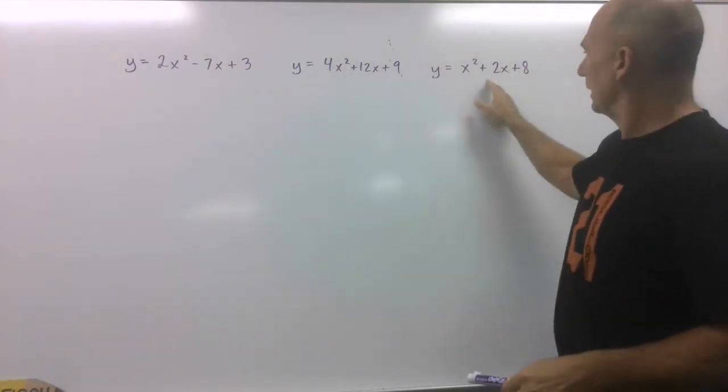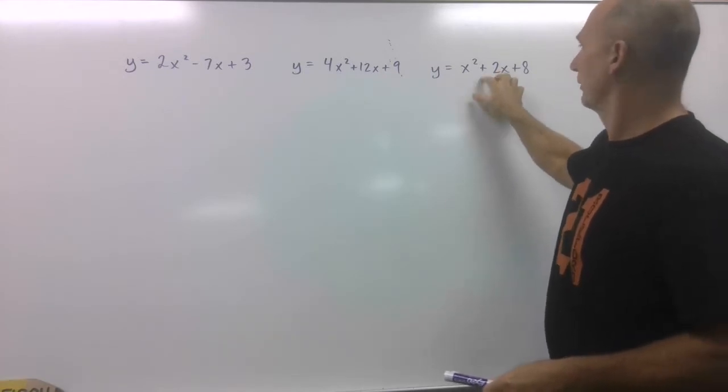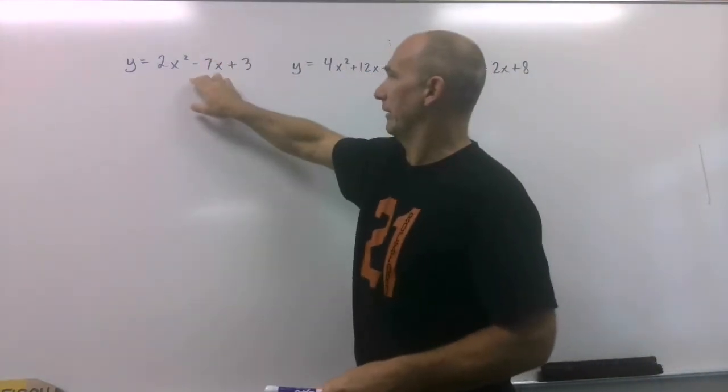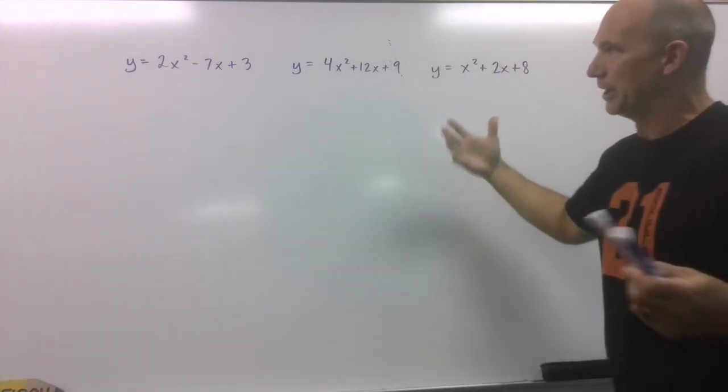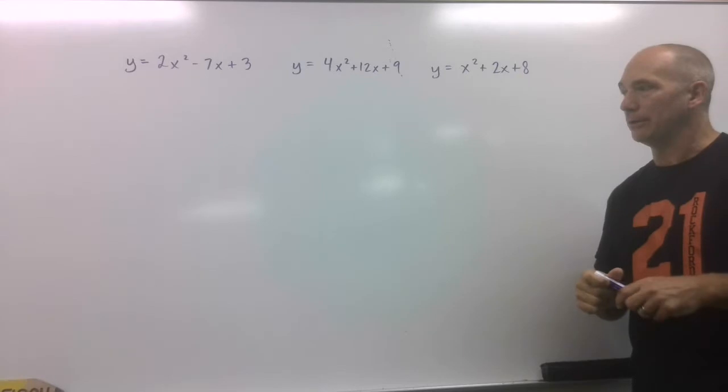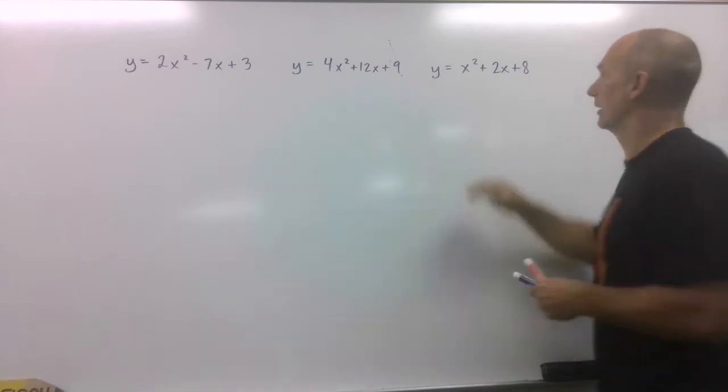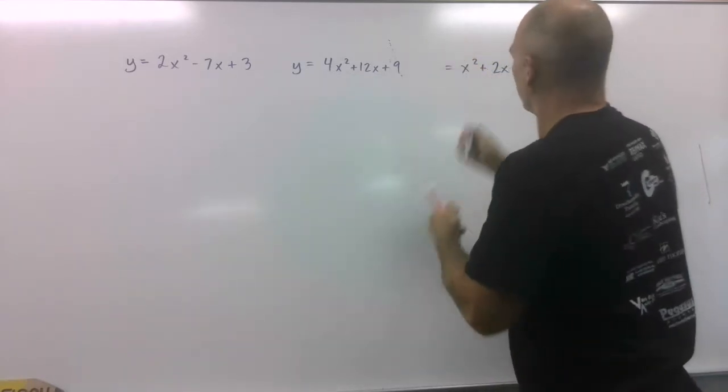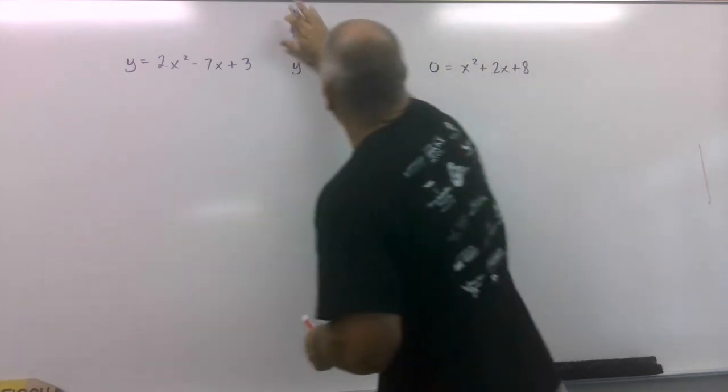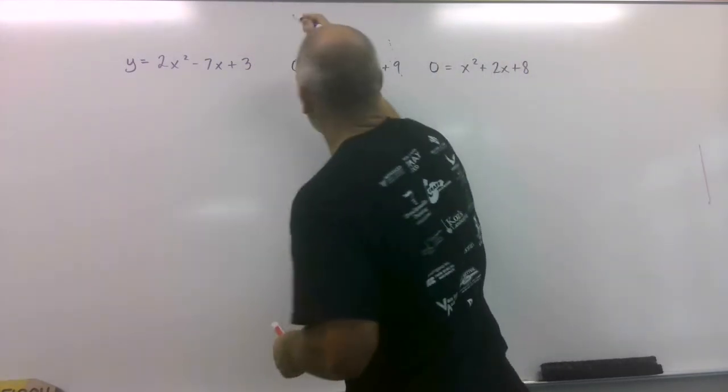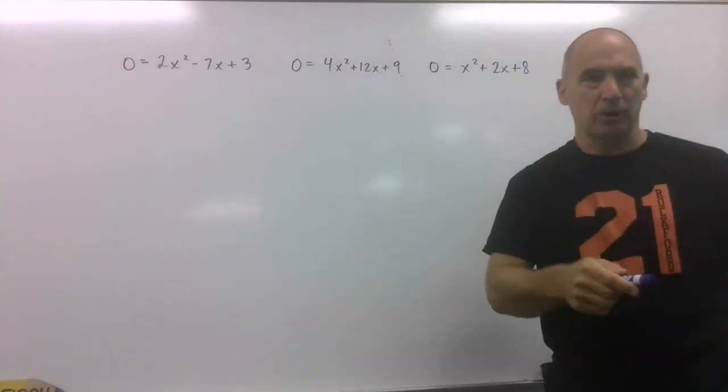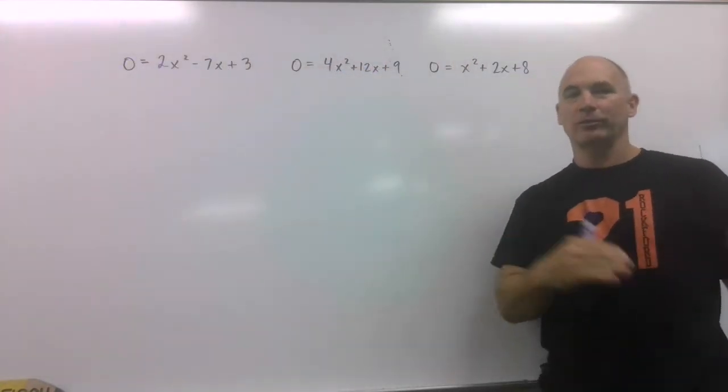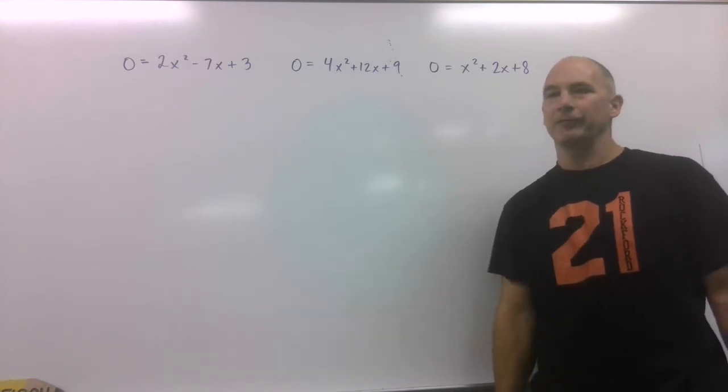So here are three parabolas: y equals this, y equals this, y equals this. Now just so you know, that's your traditional setup for a parabola. Now, your homework is going to have this. They're going to be all equal to zero, so they're already giving you a little boost, telling you, hey, find the zeros. They're setting y equal to zero. I'm throwing that little nugget in for free.